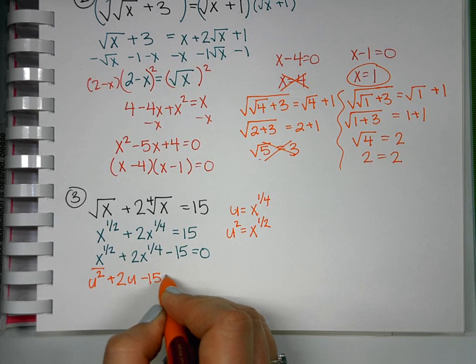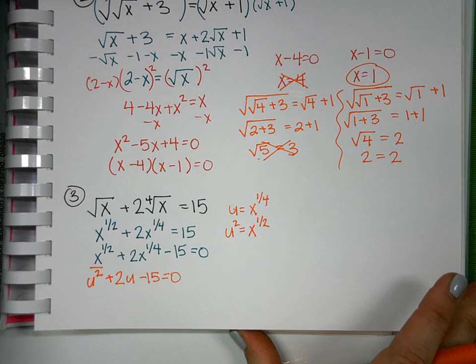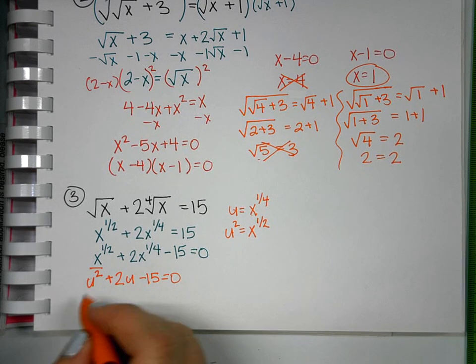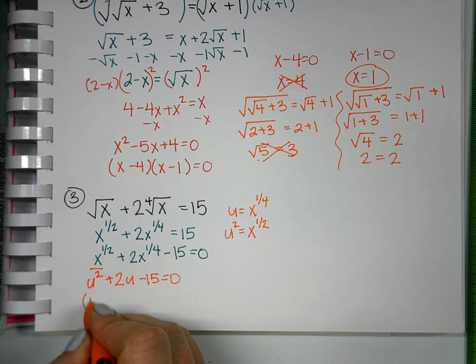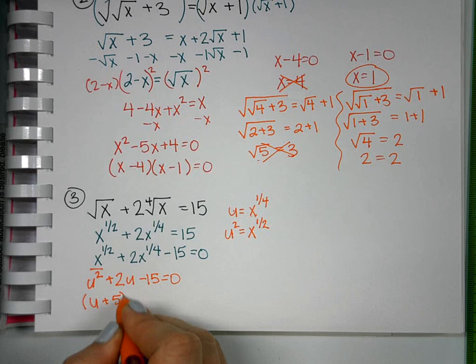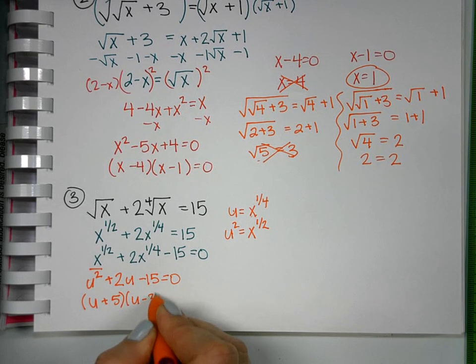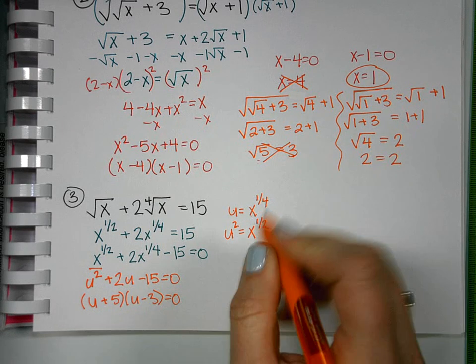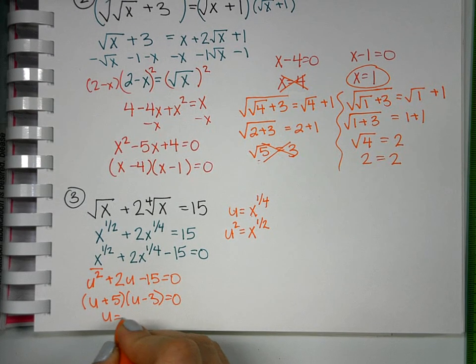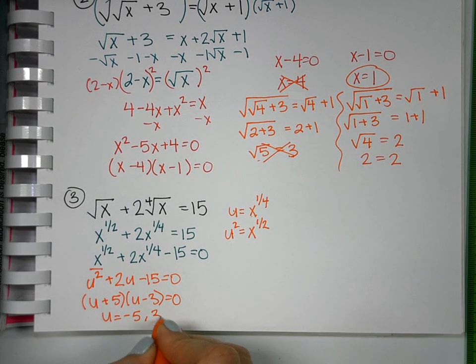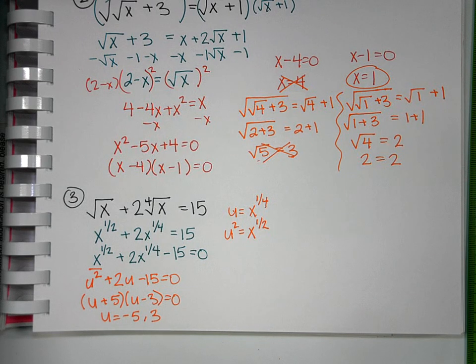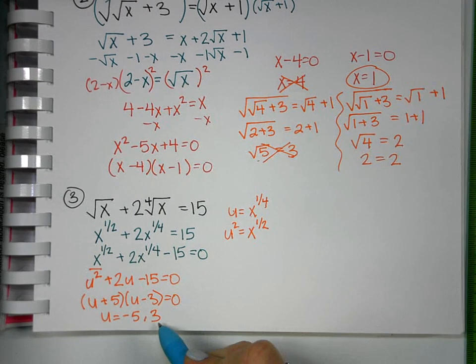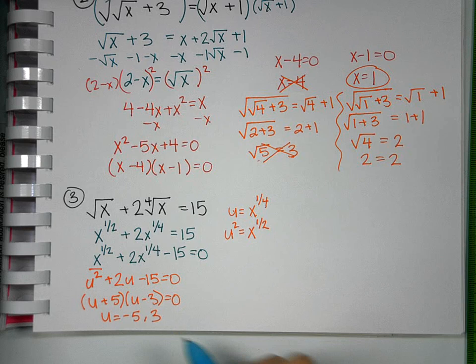I have myself now a simpler looking polynomial that I can factor. So u plus 5, u minus 3, and so when I actually go to solve it, I get u is equal to negative 5 and positive 3. Now that's what u equals. We have to go back to find out what x equals.